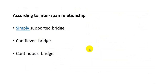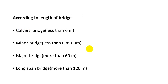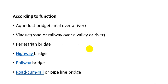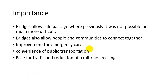As per inter-span relationship, bridges can be classified as simply supported, cantilever bridge, or continuous bridge. According to length: a culvert bridge has a span less than 6 meters; a minor bridge has a span of 6 to 60 meters; a major bridge has a span of 60 to 120 meters; and a long-span bridge has spans more than 120 meters. According to function: aqueduct bridge (canal over river), viaduct (road or railway over valley or river), pedestrian bridge, highway bridge, railway bridge, and road-cum-rail or pipeline bridge.